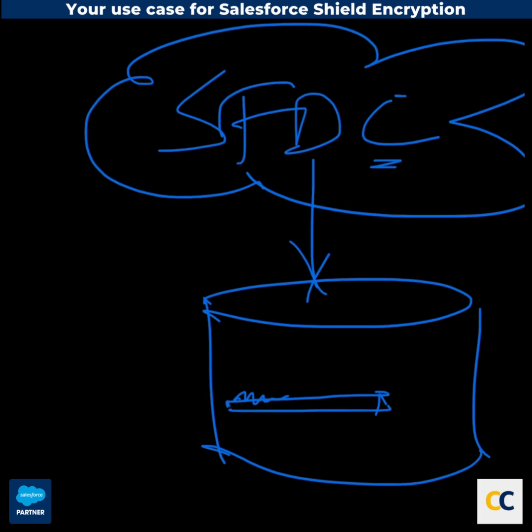What Shield Encryption does is it gives you the ability to have your own key. This could be a software key. You could also use a hardware security module, or an HSM-based key. And that way, you are encrypting this data with your own key.